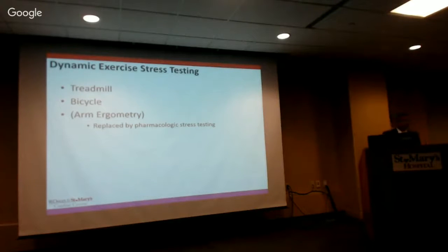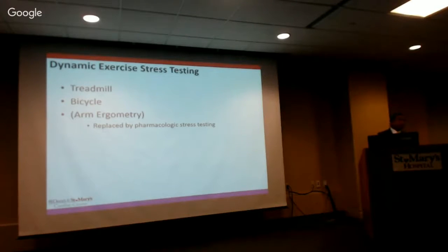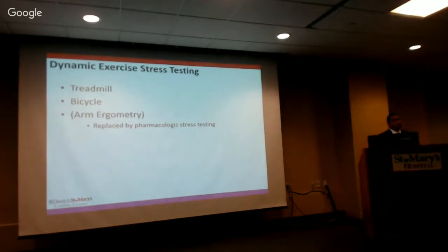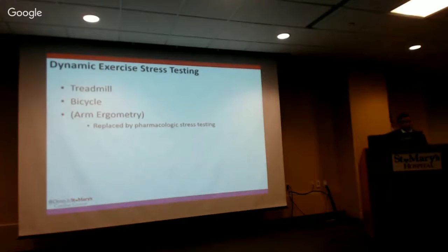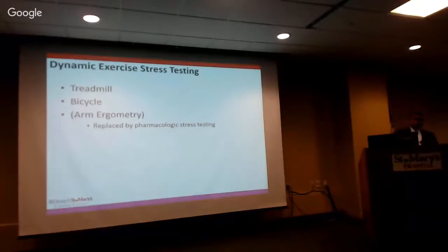For dynamic stress testing, we use the treadmill — that's our standard across our system and most systems in the United States. Other options are bicycle and arm ergometry, which is basically an arm bicycle used primarily for people who cannot walk, and that's essentially been replaced with pharmacologic stress testing.